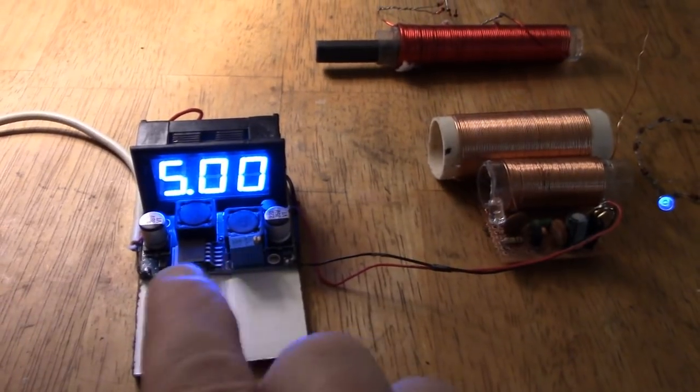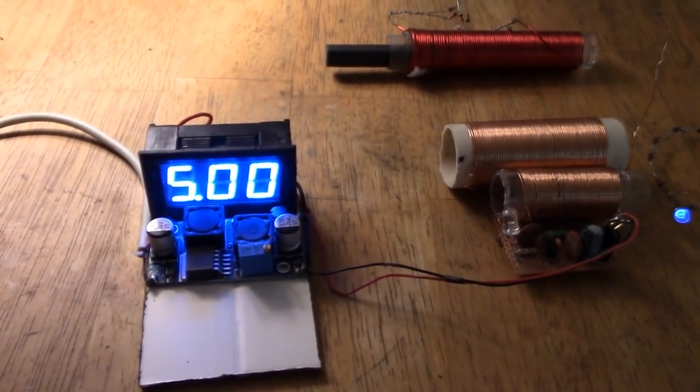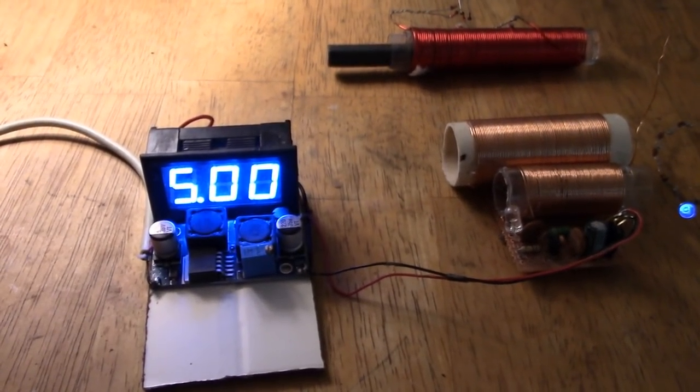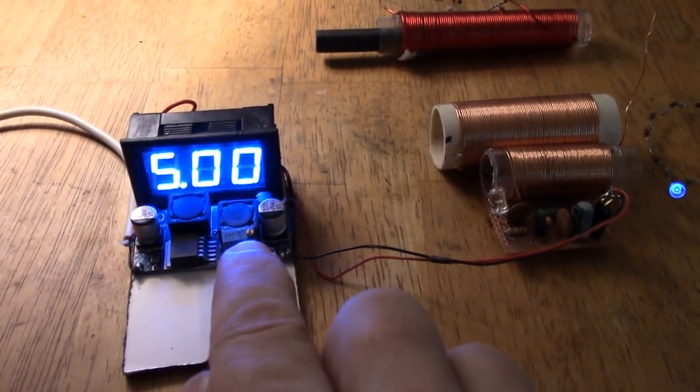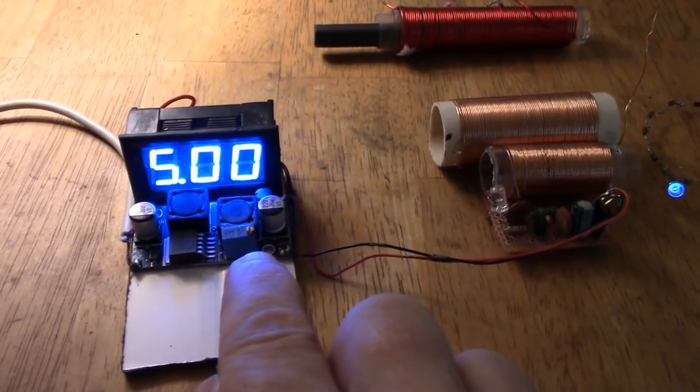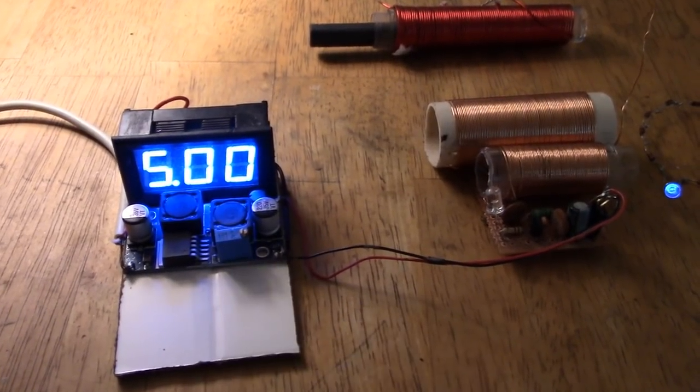What we have here is a cheap Chinese booster circuit. They go from about 3.5 volts to 30 volts and only a couple of dollars, about the same price for one of these voltage screens. By twisting this little part here we can change the voltage and it makes for a nice little power supply.